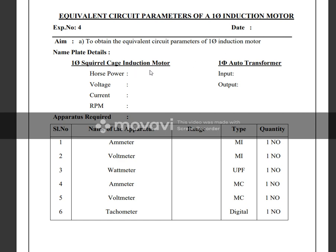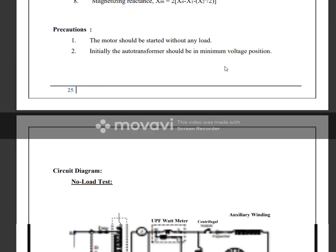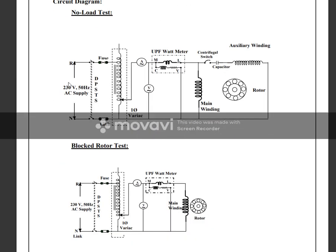This is the squirrel cage motor circuit diagram. The circuit consists of a DPST switch, a single phase variac, an auto transformer, an ammeter, a voltmeter, AC wattmeter, UPO wattmeter, main winding, auxiliary winding motor, capacitor, and a centrifugal switch.